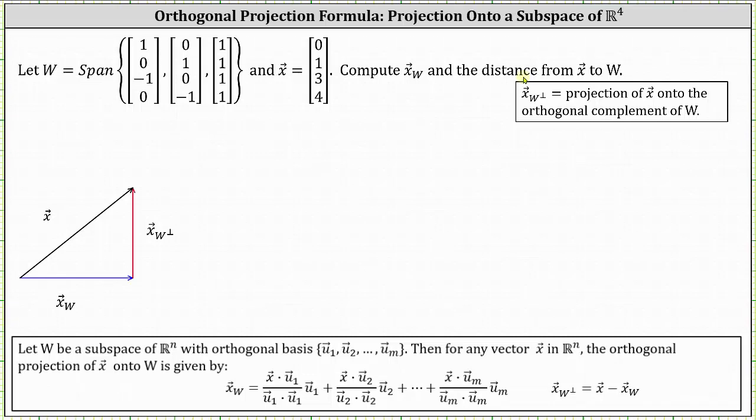Welcome to an example on how to find the projection of a vector onto a subspace in R4 when the subspace has an orthogonal basis.